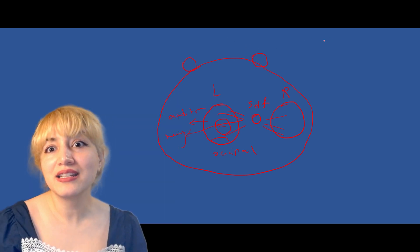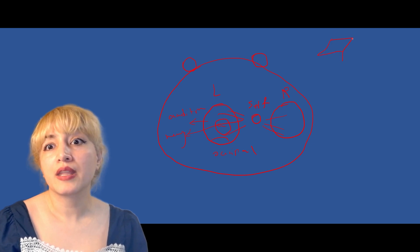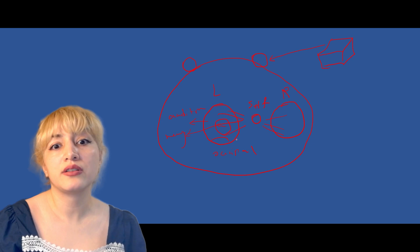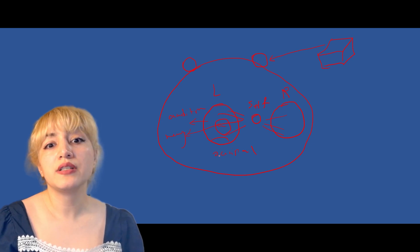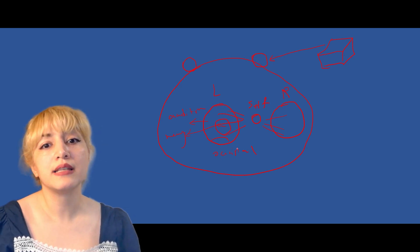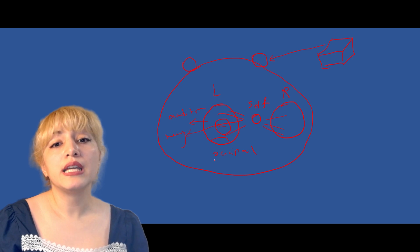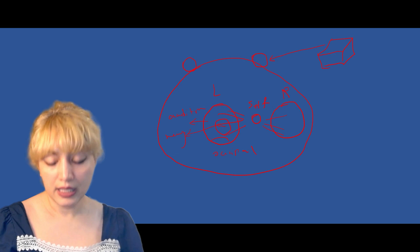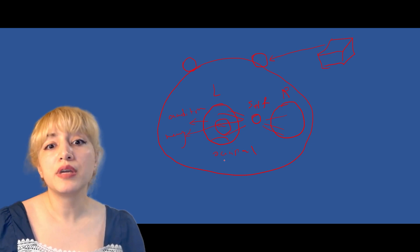So when we see an object, say this box here, the photons from this box reach the eye and that goes to the vision center, and in the vision center it gets processed. But if we are aware of seeing an object, there must be somewhere in that region a referral to self.